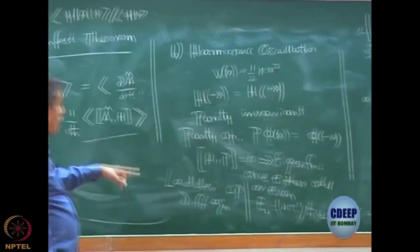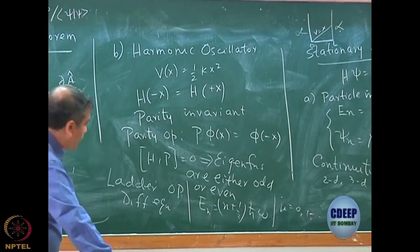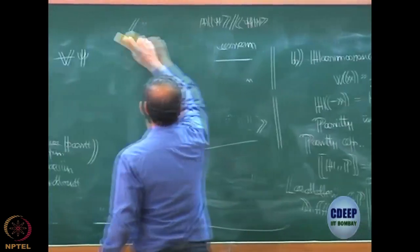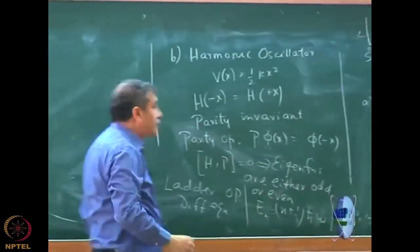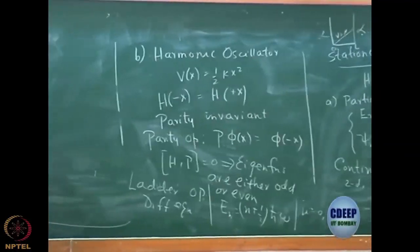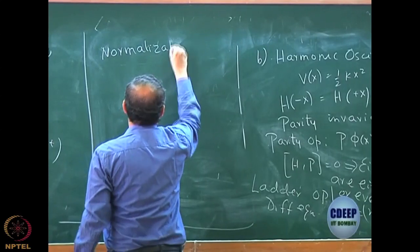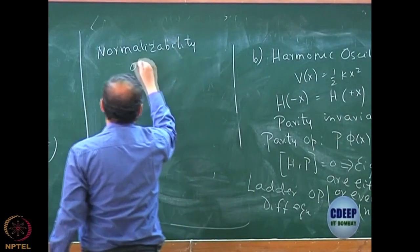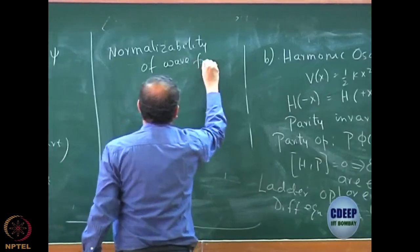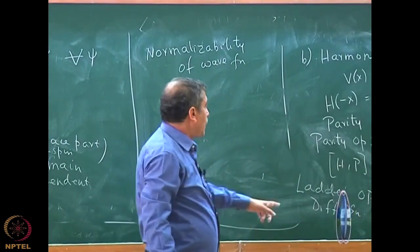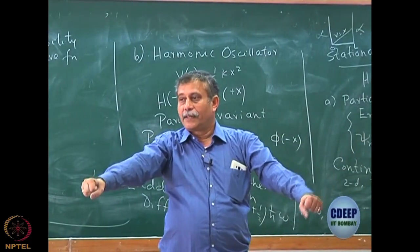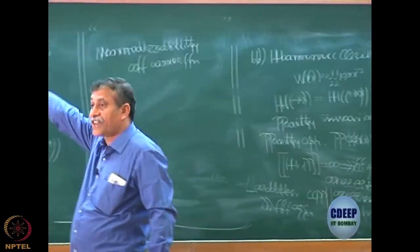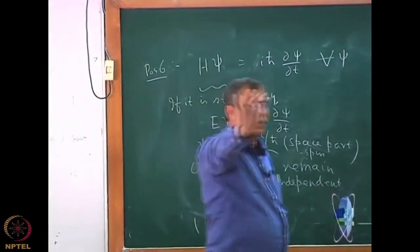In solving the harmonic oscillator differential equation, we encountered an important concept: normalizability. The wave function must be normalizable — just like we required continuity of the wave function. If the limit of psi(x) as x tends to infinity is finite and non-zero, then the integral of |psi|² dx from minus infinity to plus infinity will become infinity, and the wave function is not normalizable.